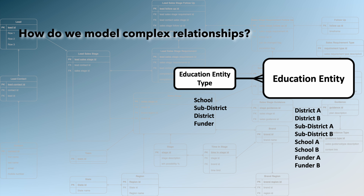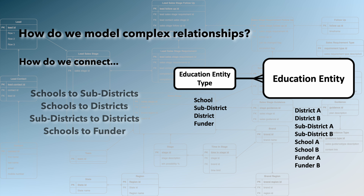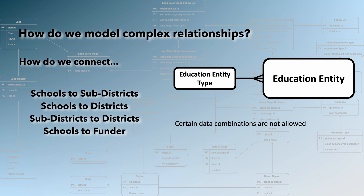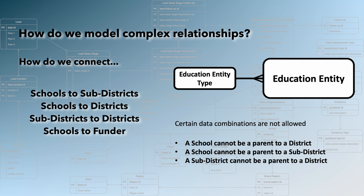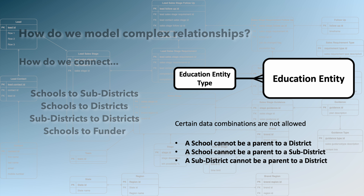But how do we model the complex relationships between the parties? How do we set up schools under a district, sub-district, or funder? How do we set up a sub-district with multiple parents — that is, district and funder — and multiple children, that is multiple schools? And perhaps most importantly, how do we prevent setting up districts and sub-districts under a school, or a district under a sub-district?